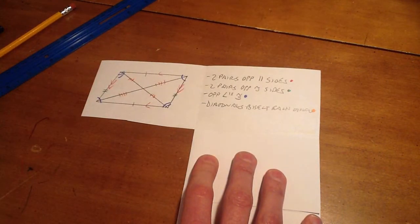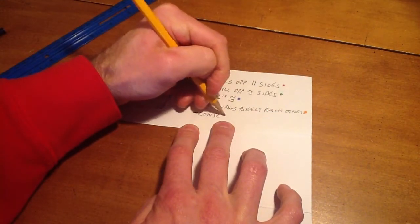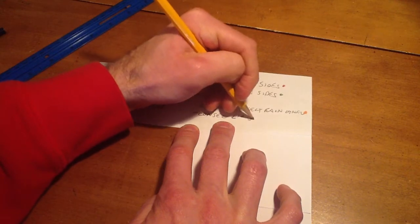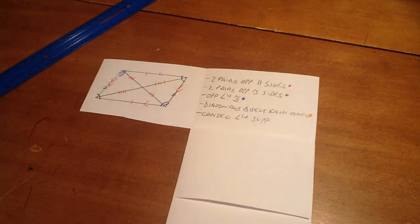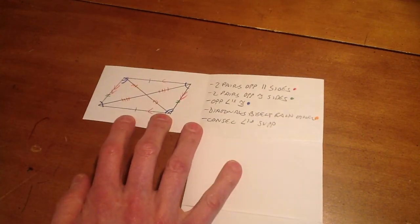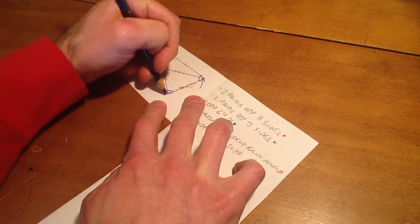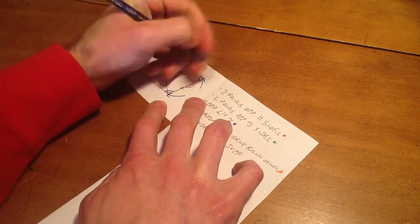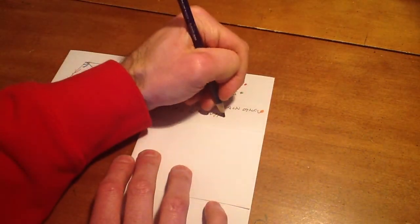And then the final property is that the consecutive angles are supplementary. And the way I'll mark that is I'll show that this angle here, this angle here, add to 180. And again, color code it.